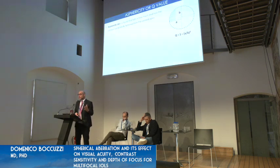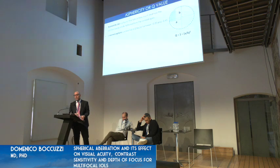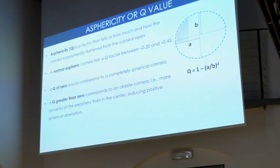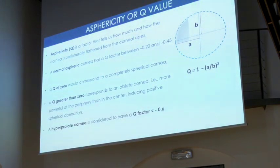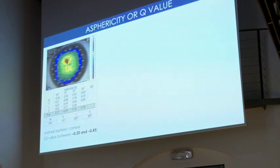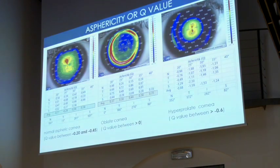When we talk about spherical aberration, we also have to describe the shape of the cornea using the Q value, which is asphericity — a factor that tells us how much the cornea is flattened in the periphery with respect to the center. A normal aspheric cornea has a Q factor between -0.2 and -0.45. A Q value of 0 means a completely spherical cornea. A Q greater than 0 means a prolate cornea, which occurs after myopic refractive surgery, while a Q lower than -0.6 indicates a hyperprolate cornea as seen after hyperopic refractive surgery.